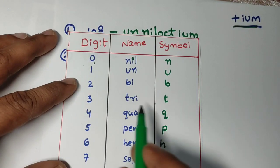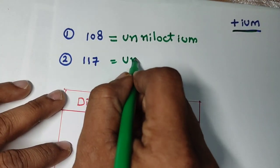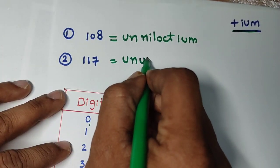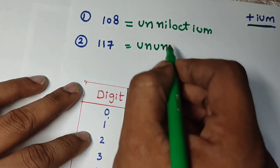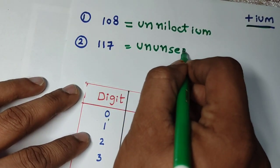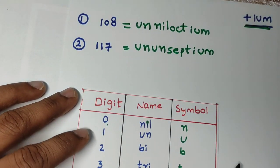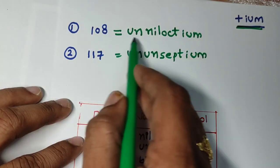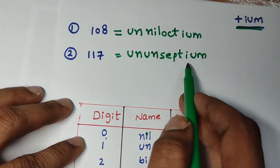See, 117. 1 for un, you can write. Again 1 is there, right? So un. For 7 what you have to write? Sept. After that what do I have to add? IUM. Very simple. 108 is unniloctium. 117 is ununseptium.